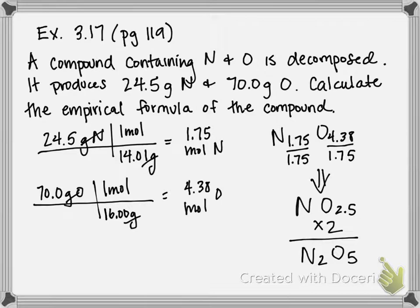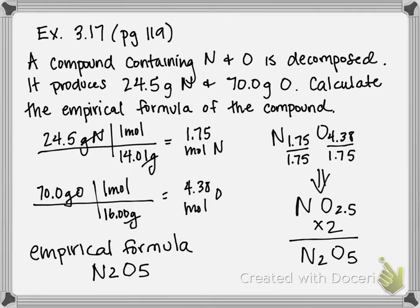So both of these are now whole numbers, so therefore my empirical formula is N2O5, and that is your final answer for this problem.